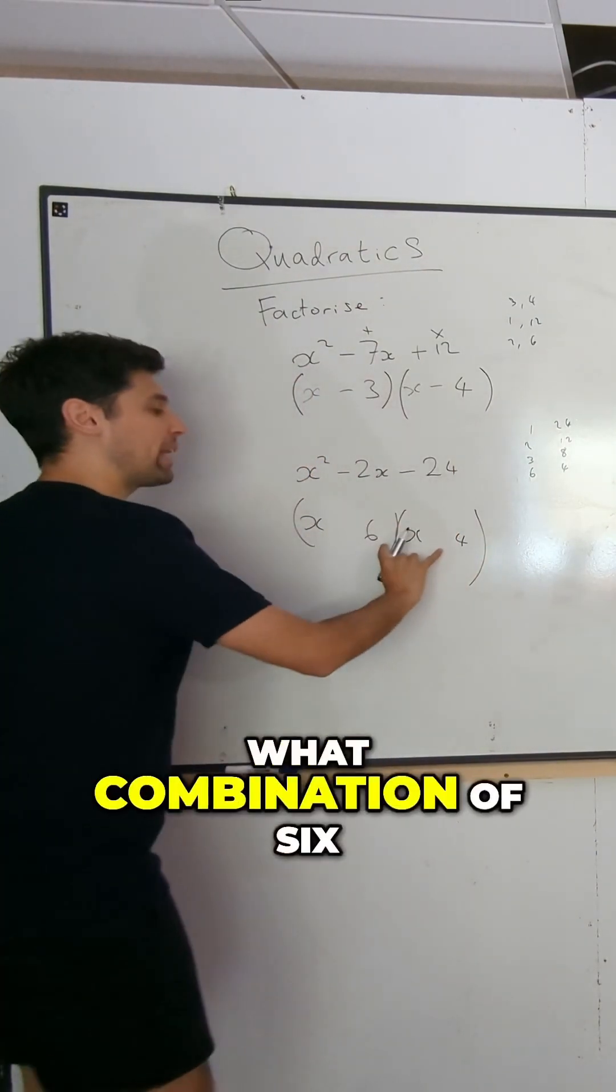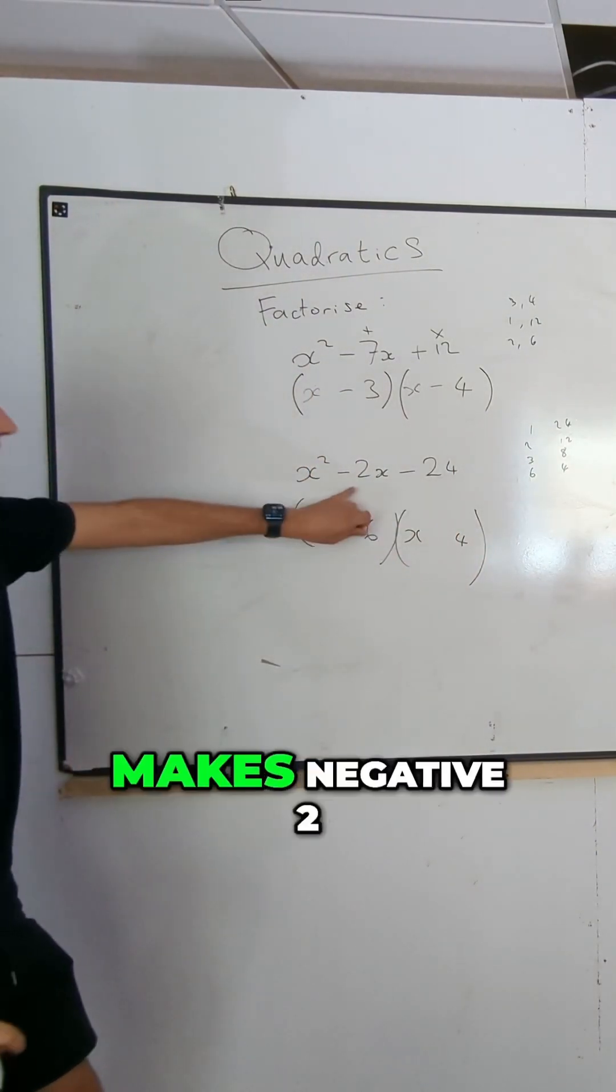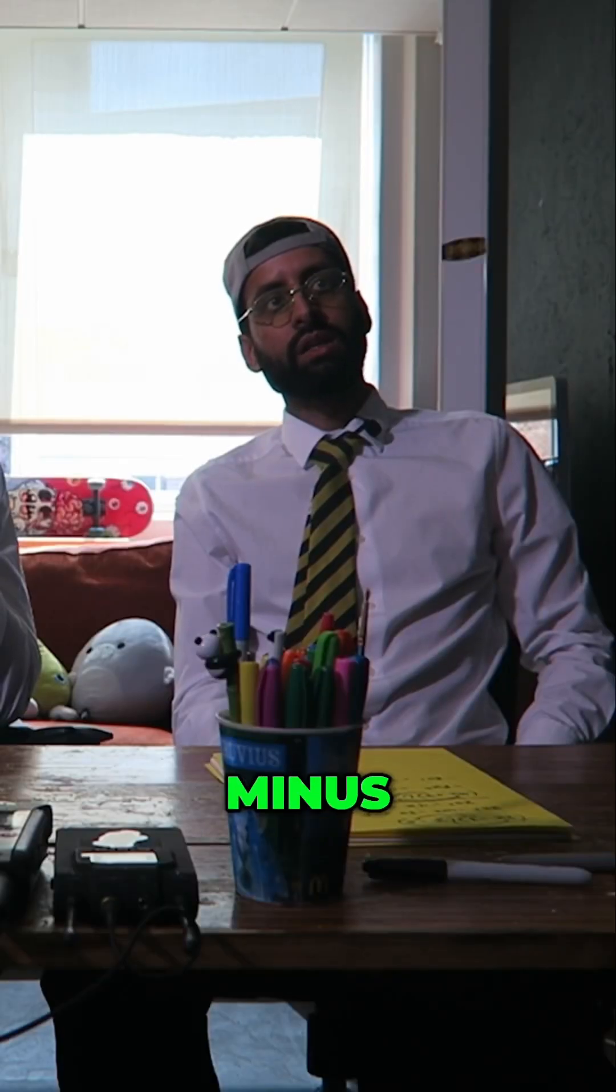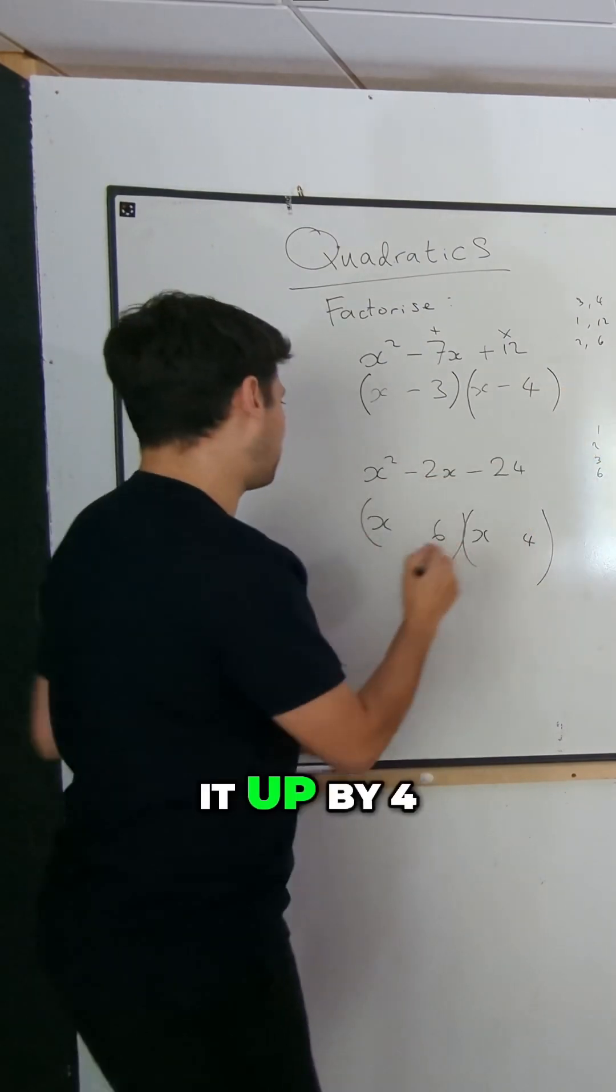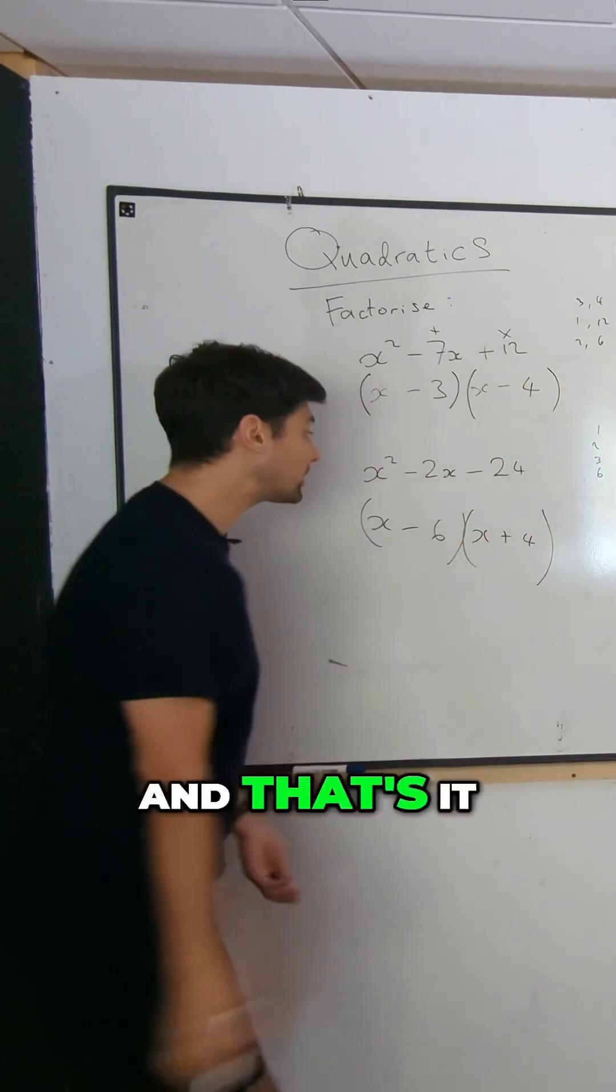So we do 6, 4. Now, what combination of 6 and 4, what sum makes negative 2? Minus. Minus 6 and plus 4. Minus 6 and plus 4. We're starting at minus 6 and we're bringing it up by 4. Minus 6 plus 4 and that's it.